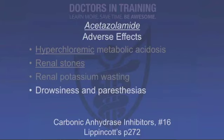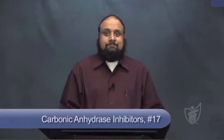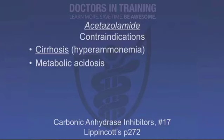The drowsiness and paresthesias are more related to the effects on cerebrospinal fluid than the diuretic effect. There are also contraindications: carbonic anhydrase inhibitors can contribute to hyperammonemia, which is particularly bad in cirrhotics with hepatic encephalopathy — they get decreased secretion of ammonia in their urine, the urine becomes very alkaline, and the encephalopathy gets worse. So don't give acetazolamide to your cirrhotic patients.